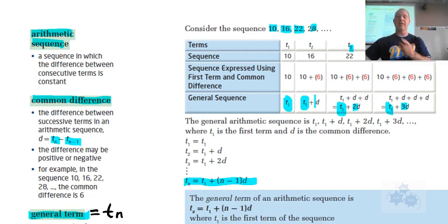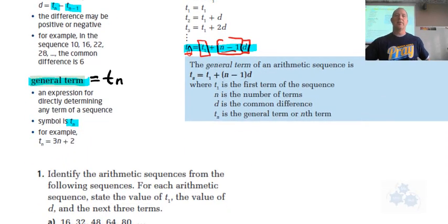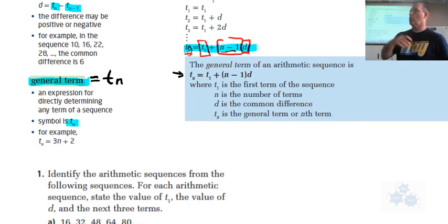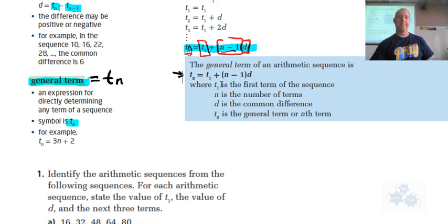Notice that the number of common differences that you add to the first term is one less than the term number in the sequence. That's where this n minus 1 comes from. If I want to find t of n, I take the first term, and I add whatever is one less than this number. That's n minus 1 times the common difference. And you come up with this general term. Please write down this general term formula for an arithmetic sequence.